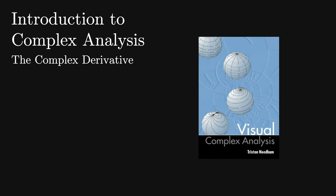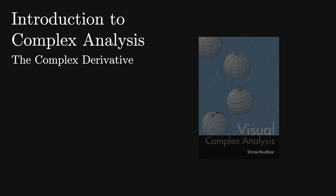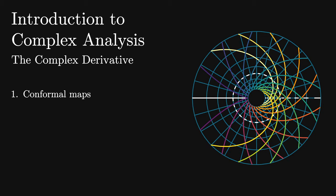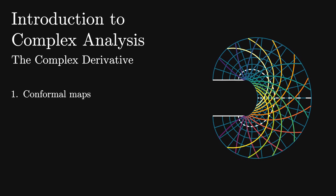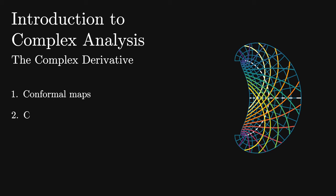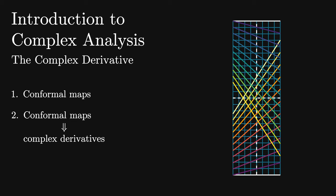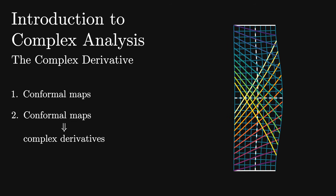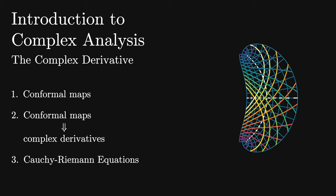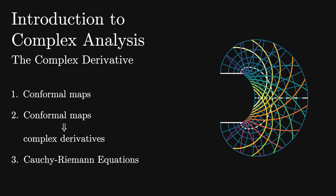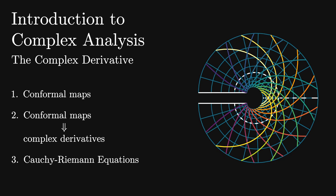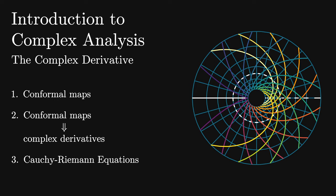Hello and welcome to a new video in our unit on complex analysis. In this video we'll be exploring the complex derivative, adapted from Visual Complex Analysis by Tristan Needham. We'll define what it means for a complex function to be a conformal map and use that to define the complex derivative. We'll show that if a complex function is a conformal mapping, then that function has a well-defined complex derivative almost everywhere. The consequence is a system of linear differential equations called the Cauchy-Riemann equations, which we can use to construct complex analytic functions with specific properties.